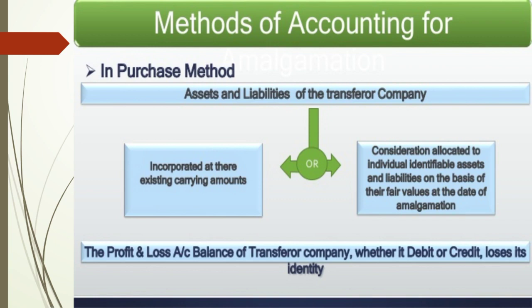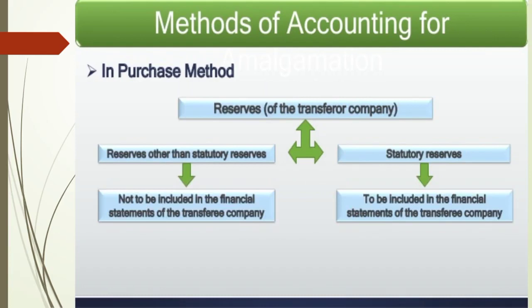In the purchase method, the profit and loss balance of the transferor company, whether debit or credit, loses its identity. Regarding reserves of the transferor company, there are two treatments: if the reserves are other than statutory reserves, they are not included in the financial statements of the transferee company. However, if it is a statutory reserve, it must be included in the financial statements of the transferee company.